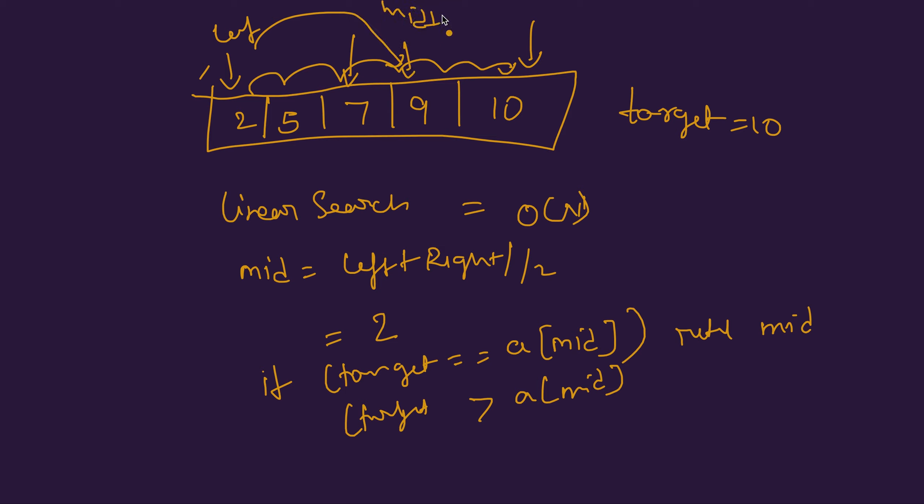Then now the left index would be left equals 2 plus 1 which is 3. If the target is less than a[mid], what we do is we move this right index to mid minus 1. Right equals mid minus 1 which would be 1.